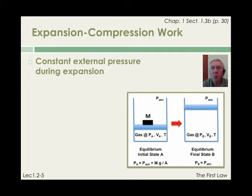During the whole process of expansion, the external pressure was constant and equal to the atmospheric pressure. So, we can write w equals minus p external times delta v equals minus p external times v sub b minus v sub a.